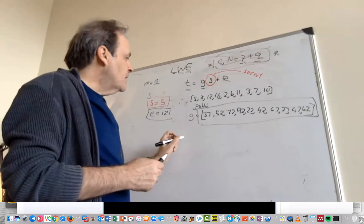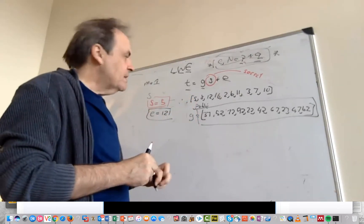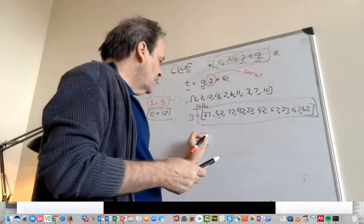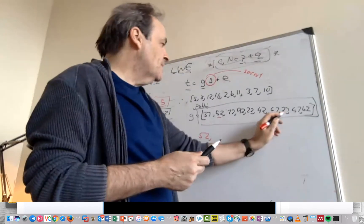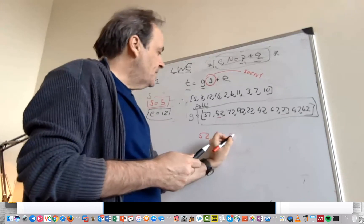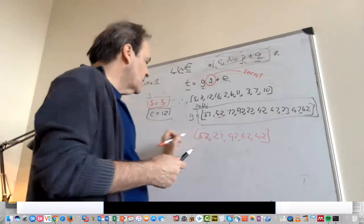We're now going to take a sample of those. And in this case we'll take the values of 52, 27, 92, 62 and 42.